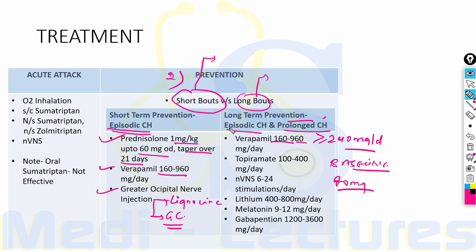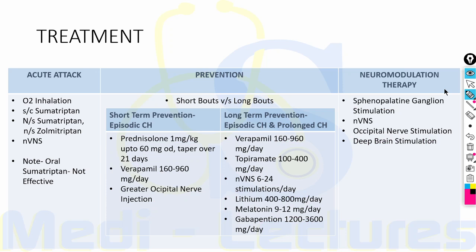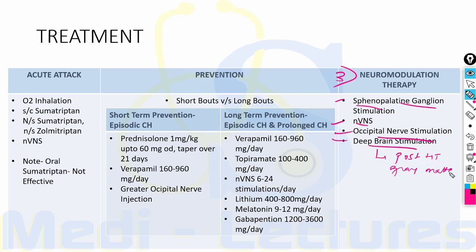Other drugs for long-term prevention: topiramate 100 to 400 mg/day, non-invasive vagal nerve stimulation 6 to 24 stimulations per day, lithium 400 to 800 mg/day, melatonin 9 to 12 mg/day, gabapentin 1200 to 3600 mg/day. When medical therapy fails for chronic cluster headache, neuromodulation strategies include sphenopalatine ganglion stimulation, non-invasive vagal nerve stimulation, occipital nerve stimulation, or deep brain stimulation of the posterior hypothalamic gray matter — successful in about 50% of patients.